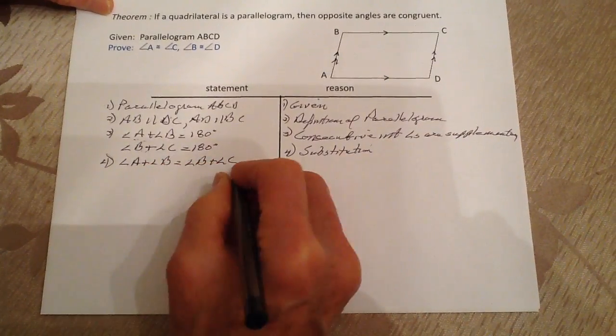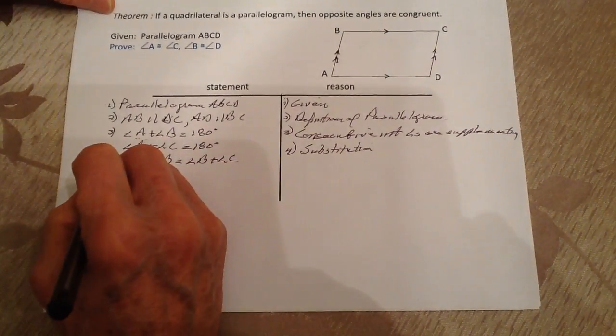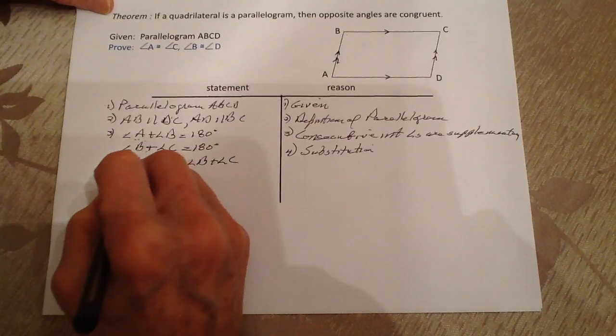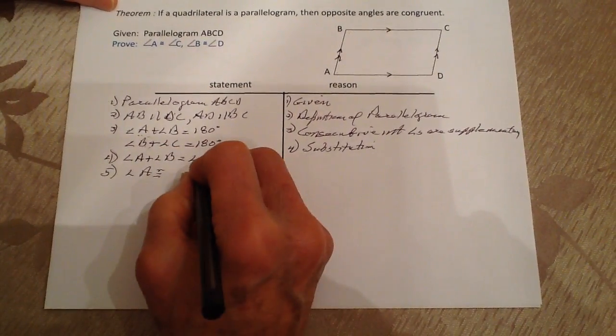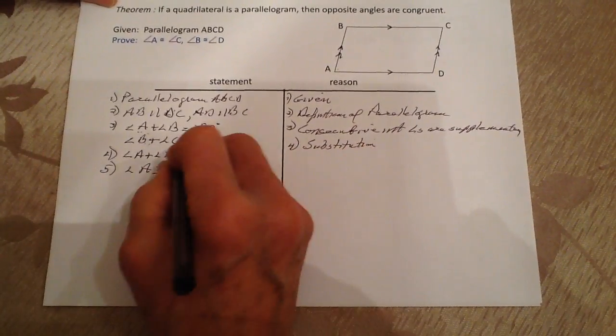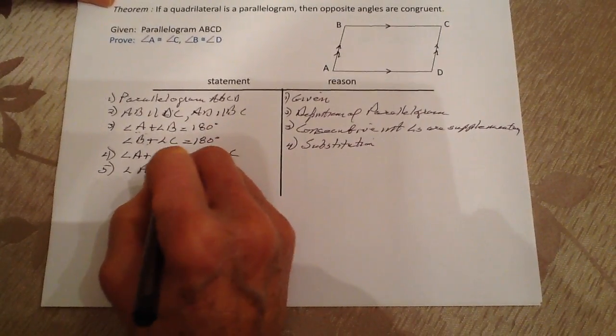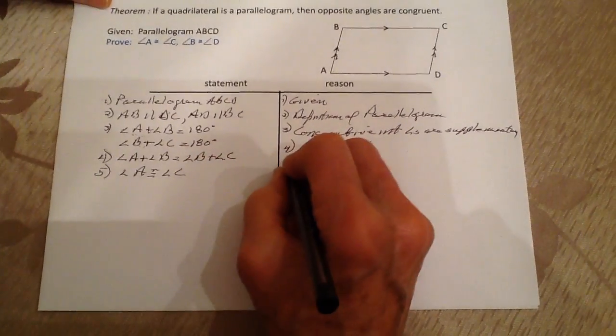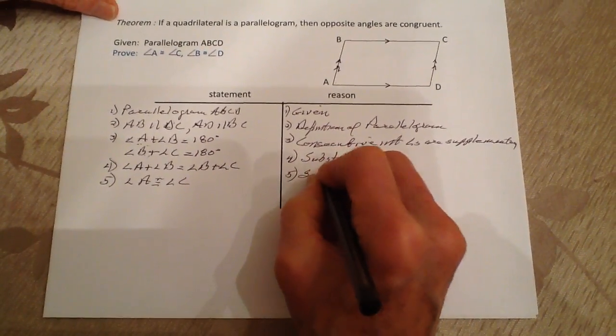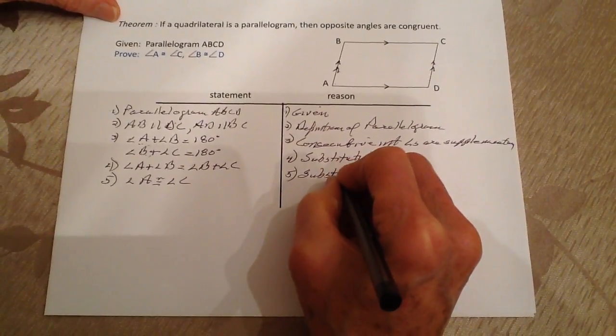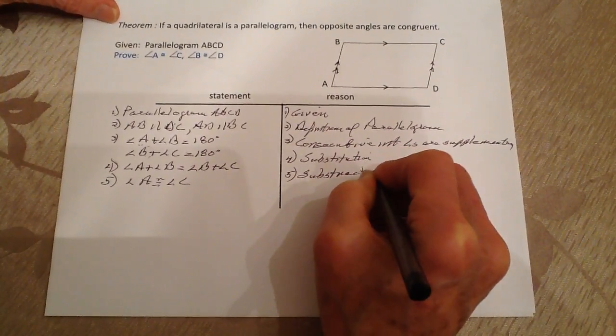Then I'm going to subtract B from both sides. So statement five: we're left with angle A is congruent to angle C. That's because of subtraction.